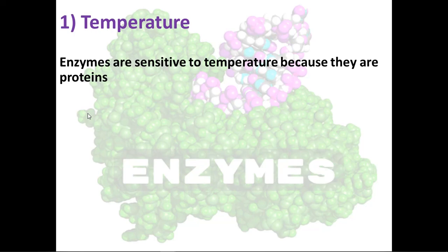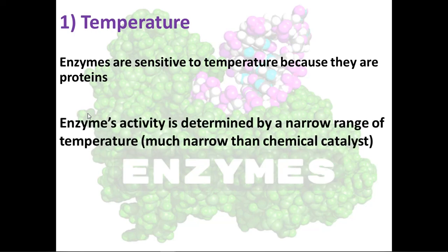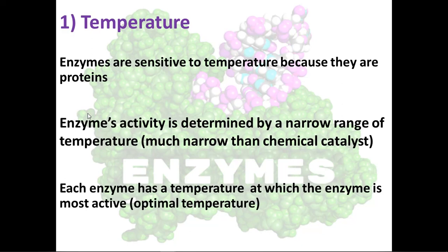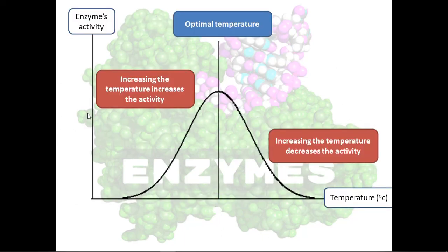So let's discuss in detail the effect of temperature. Enzymes are sensitive to temperature because they are proteins. Enzyme activity is determined by a narrow range of temperature, which is much narrower than chemical catalysts. Each enzyme has a temperature at which it is most active, which we call the optimal temperature. When we increase the temperature from the starting point, the enzyme activity increases until we reach the optimal temperature.